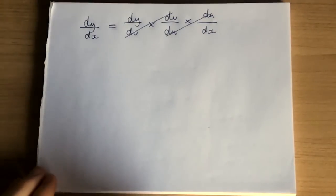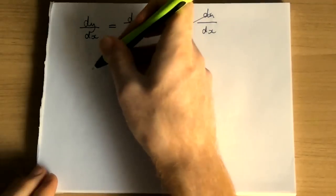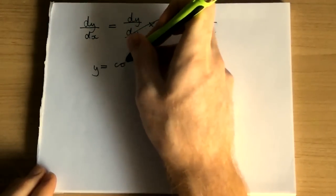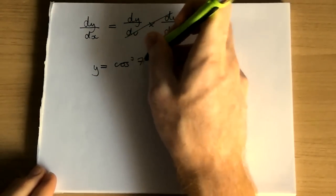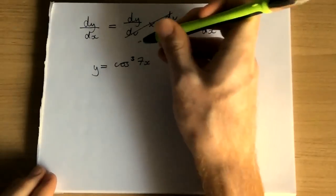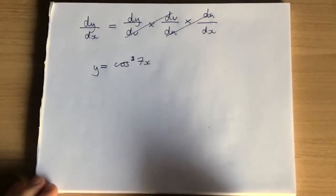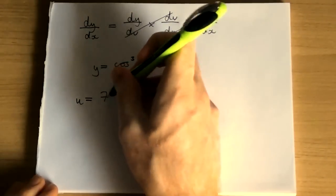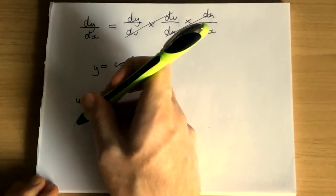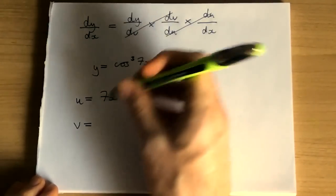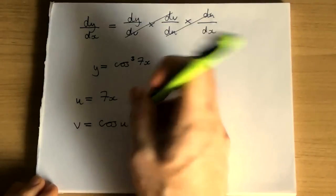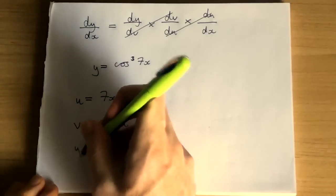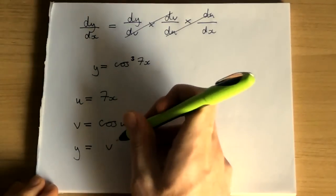So an example: find dy/dx when y equals cos cubed 7x. So the u part, the first part is 7x, the v part is cos u, and y is v cubed.